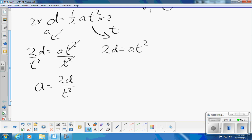Now I'm going to isolate the t squared by dividing each side by a, and I get 2d over a is equal to t squared. Now I can square root both sides and get my final version, t is square root of 2d over a.